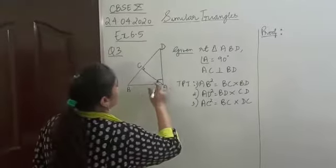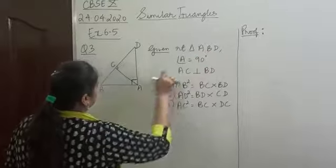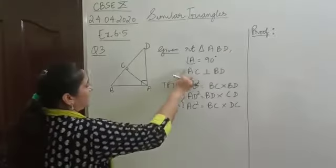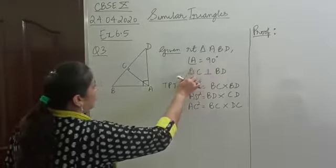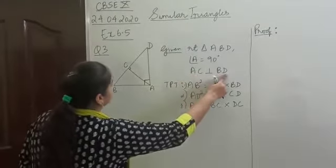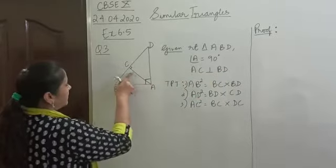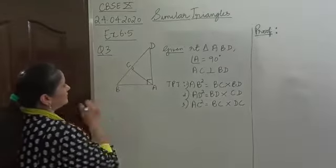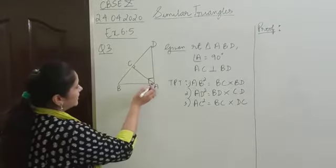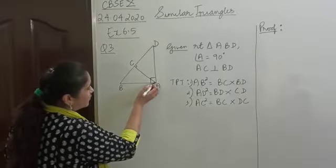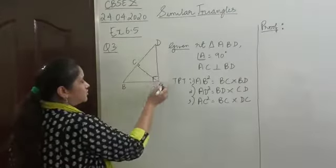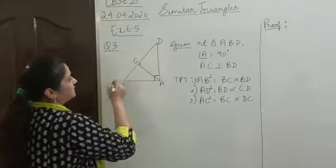Here in this figure, we are given a right triangle ABD, right-angled at A, meaning angle A is 90 degrees. Also, the line segment AC is perpendicular to the line segment BD. AC is a line segment from the vertex containing the right angle of triangle ABD to the hypotenuse BD.